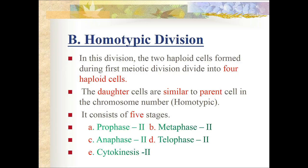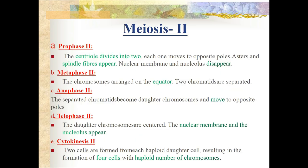Meiosis II is the homotypic division. The two haploid cells formed in meiosis I divide into four haploid cells. The daughter cells are similar to the parent cells, hence called homotypic. It consists of prophase II, metaphase II, anaphase II, telophase II, and cytokinesis II. In prophase II, centrioles divide and move to opposite poles, similar to mitosis; spindle fibers appear and the nuclear membrane disappears. In metaphase II, chromosomes arrange on the equatorial plane and the two sister chromatids separate, becoming daughter chromosomes that move to opposite poles. Cytokinesis II produces four haploid daughter cells.